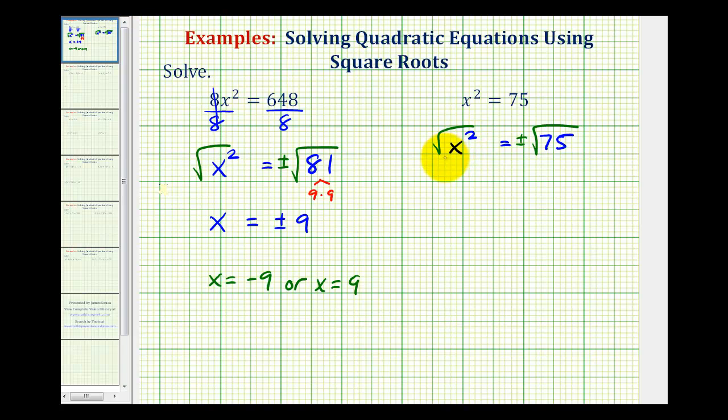So we have the square root of x² equals plus or minus the square root of 75. So on the left side, the square root of x² is just equal to x. But notice on the right side, 75 is not a perfect square, but we do need to identify the perfect square factors of 75 to simplify the square root.